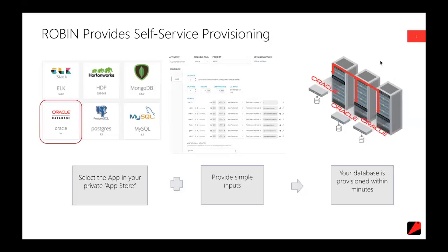The point is there's a consistent process by which any application stack can be provisioned — rendered to the end consumer so they can simply pick the app, make a few tweaks to inputs, and click 'Provision Application.' Upon doing so, Robin automatically provisions all the storage necessary. In the case of RAC using ASM, there's raw storage needed. Robin handles raw storage just as well as cooked file system storage, and provisions all storage volumes according to the inputs on screen.